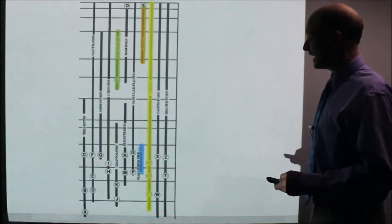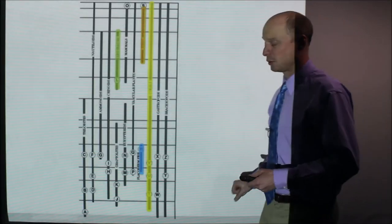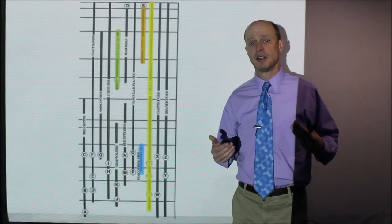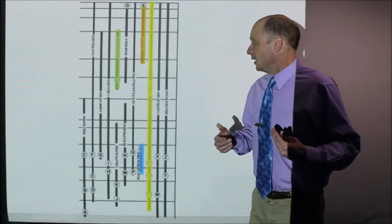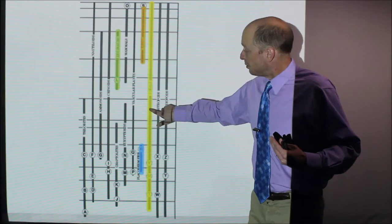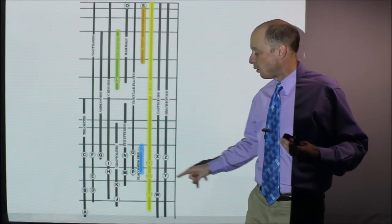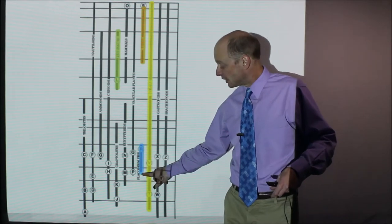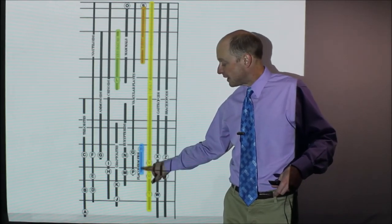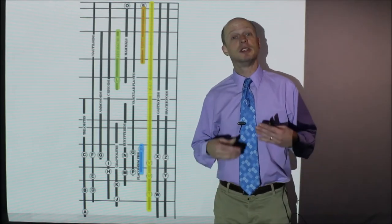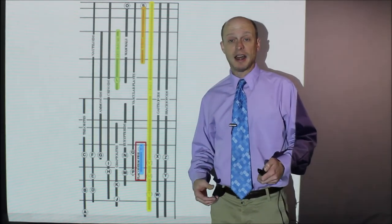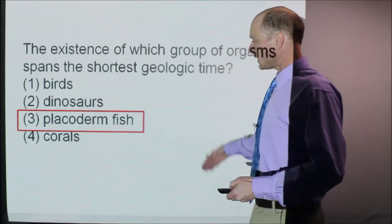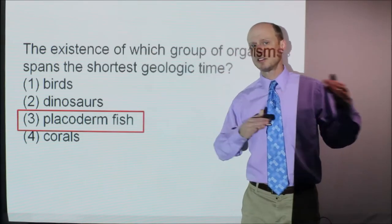Let's zoom in. I highlighted them with color. We're looking for the shortest geologic time period. The longest one would be corals here in yellow, but the shortest one is right here in blue—that's placoderm fish. They first came about here and went extinct here, so the answer is placoderm fish. That one's more straightforward as long as you know where to look, because these questions can be quite complicated.